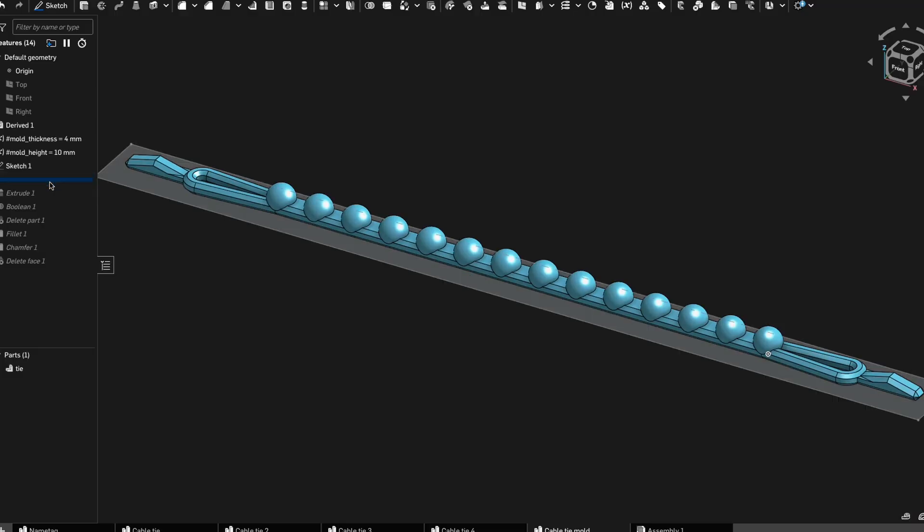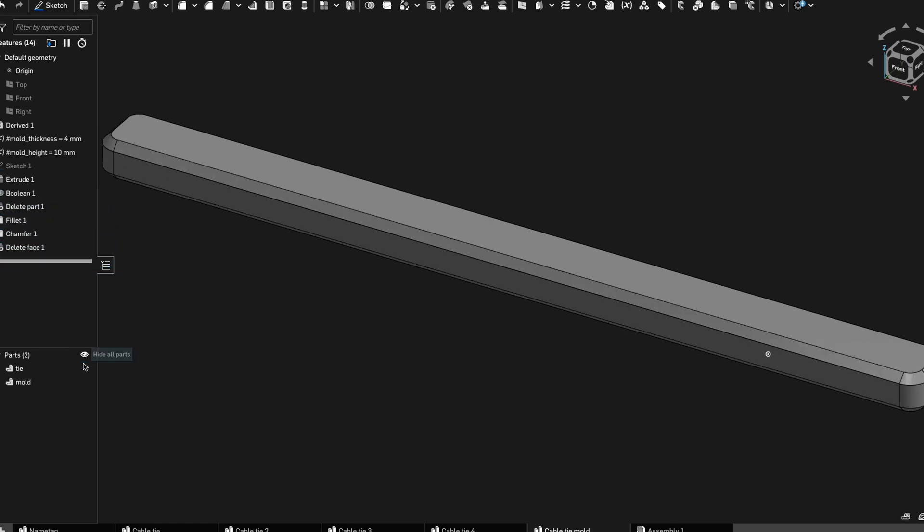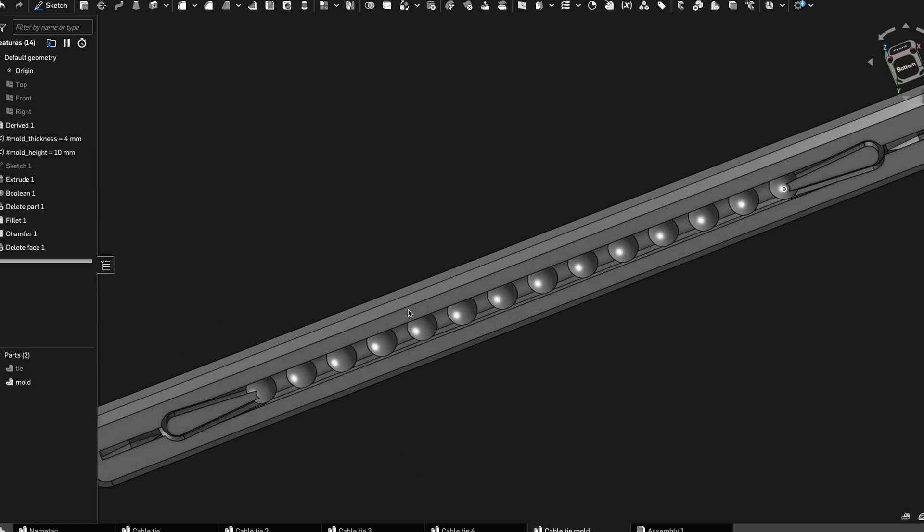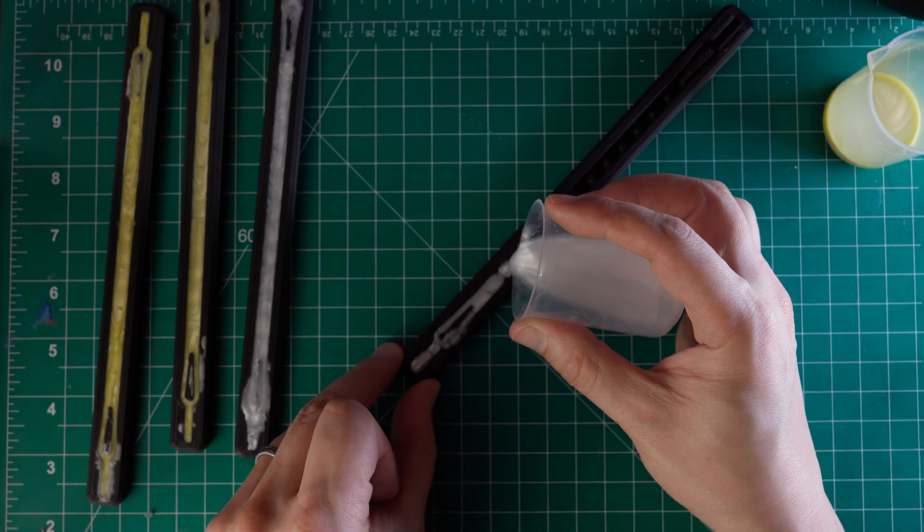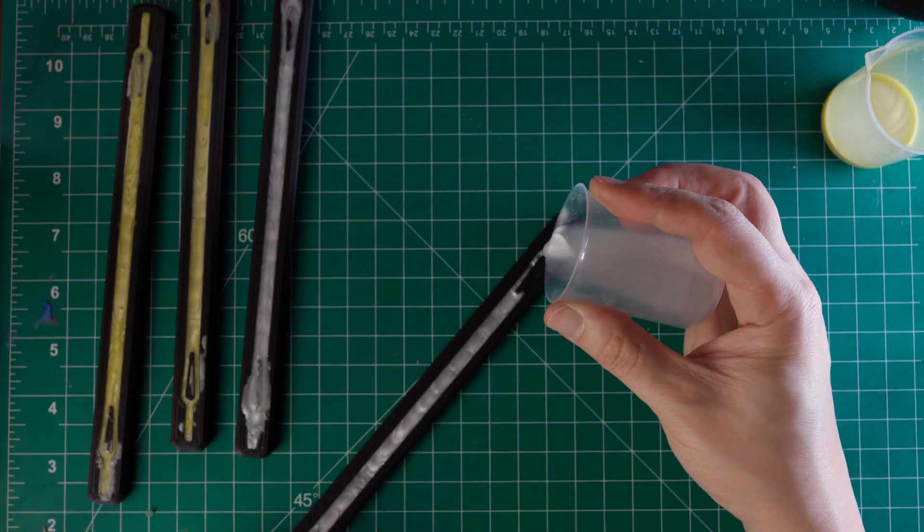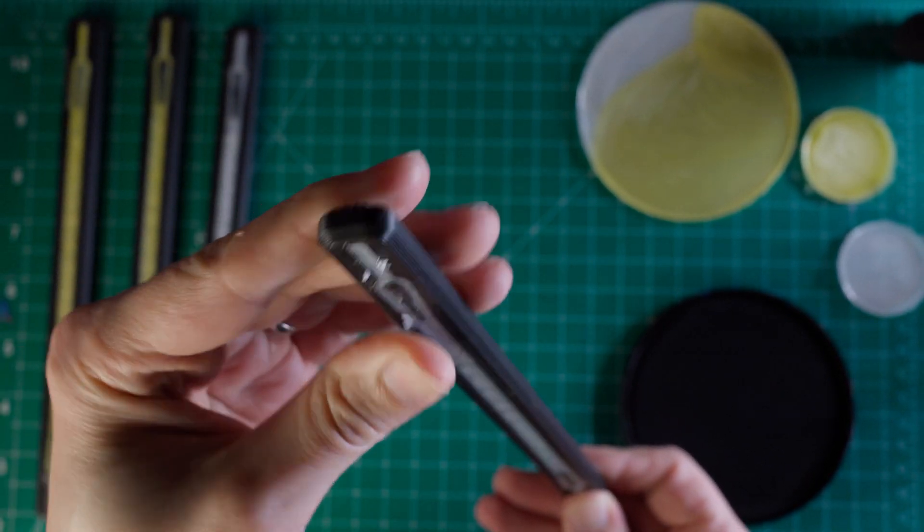To do that, I just extruded a box to enclose the cable tie, and then used a boolean difference to remove where the two parts overlap. Open molds like this are nice because if you get a clean pour, there's no flashing to clean up.